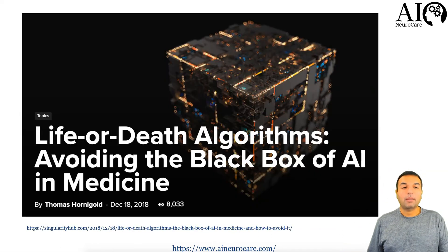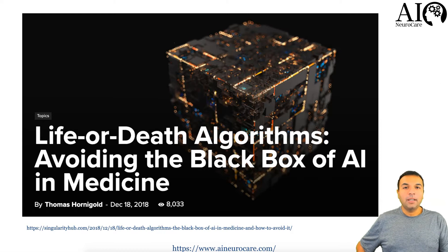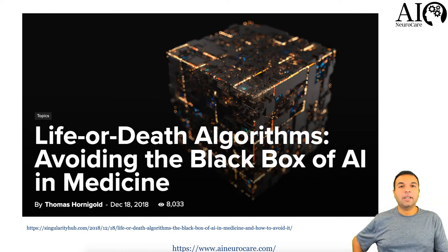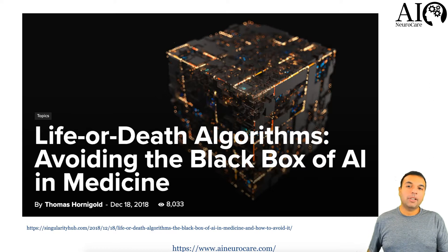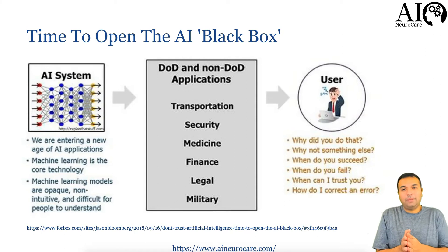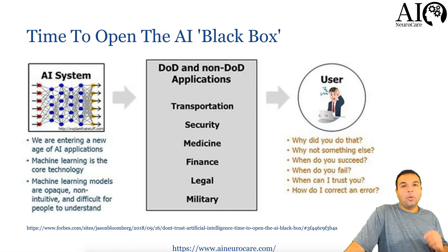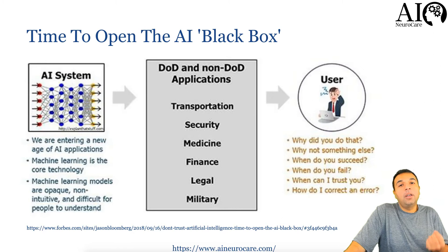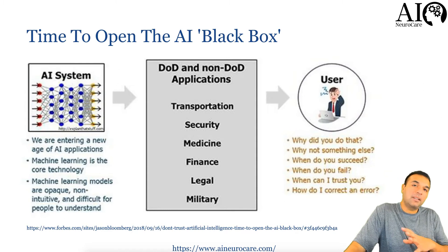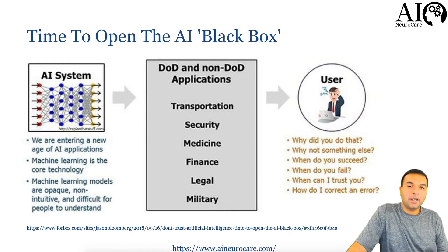Life or death algorithms must avoid the black box of AI in medicine. This is especially critical in palliative care and situations we might consider self-fulfilling prophecies — and hopefully AI can change those. It's not just medicine: in legal, finance, and military contexts, any high-impact AI system should be able to answer: Why did you do it this way? When did you succeed? When did you fail? When can I trust you? How do I correct an error? All of these need to be open. We need AI that is explainable, auditable, and transparent.